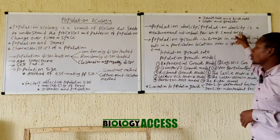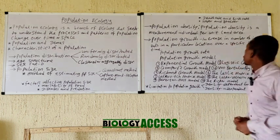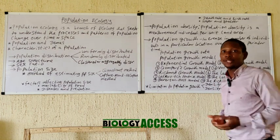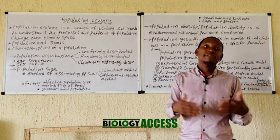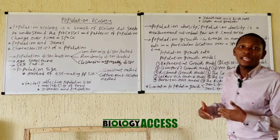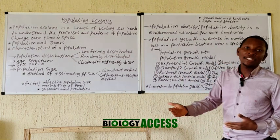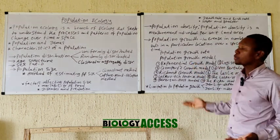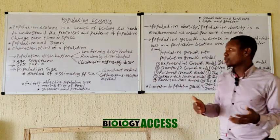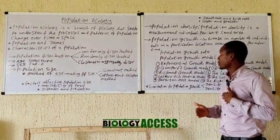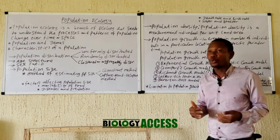The last population characteristic is population growth, which has to do with an increase in the number of individuals in a particular geographical area over a period of time. In ecology, population growth refers to an increase in the number of individuals — whether they are increasing exponentially, logistically, or otherwise. In some cases, population may actually decrease, as some countries are experiencing a decrease in population.